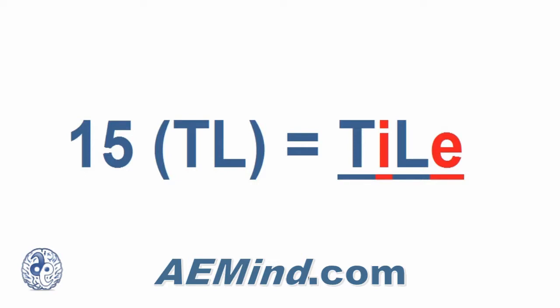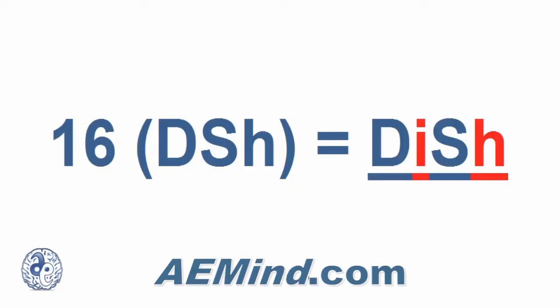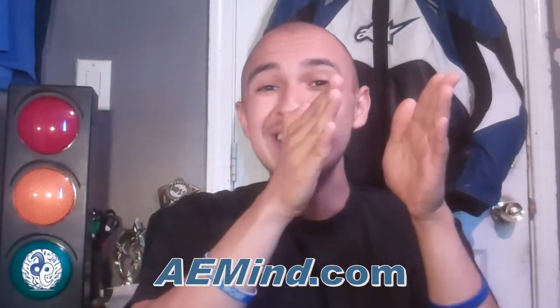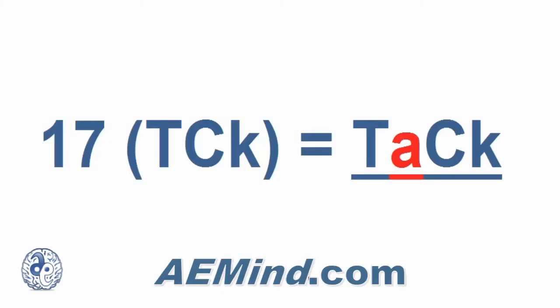Fifteen is the one and the five — the T and the L. Picture a tile. Throwing in a few vowels creates the word tile, so number 15 is a tile. Sixteen is the one and the six — the D sound and the sh sound — you create a dish. For me it's actually a satellite dish; for you it can be another type of dish, maybe a plate. From this point forward, sixteen is a dish. Seventeen is the T sound and the K sound. My picture for number 17 is a tack — a thumbtack. Picture a big fat thumbtack with a sharp pointy end that you're sticking to a wall. That is seventeen.